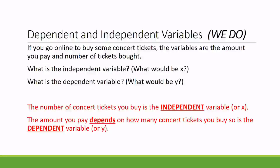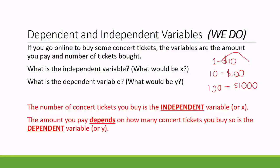The independent variable is the number of concert tickets you buy, because that doesn't rely on anything — I could choose to buy a hundred concert tickets. The dependent variable is the amount you're going to pay. If one Wiggles ticket is ten dollars, one ticket costs ten dollars; ten tickets cost a hundred dollars; a hundred tickets cost a thousand dollars. So you can see how the cost depends on how many concert tickets you buy — that's why the cost is dependent and the number of tickets is independent.